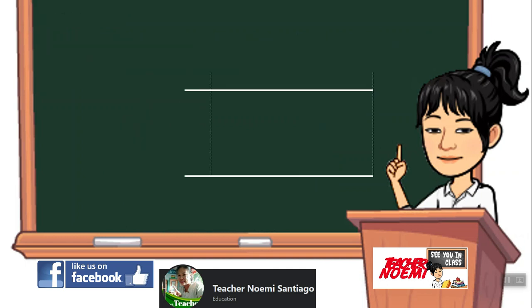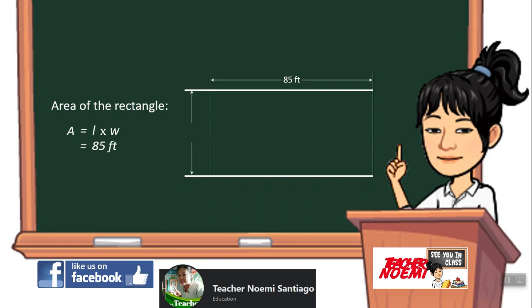Now let's find the area of each figure. Area of rectangle: the formula is A equals length times width. If the length is 85 feet times the width 40 feet, the area of the rectangle is 3,400 square feet.